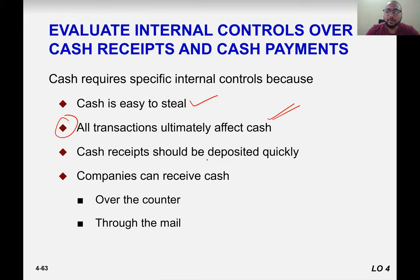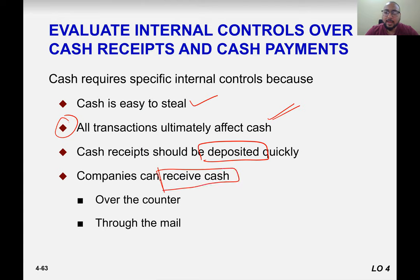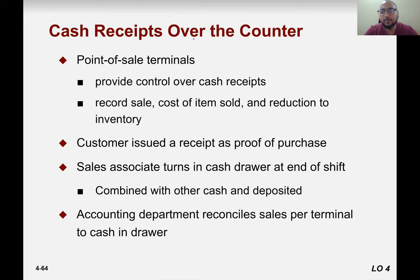Cash receipts should be deposited into the bank as quickly as possible, because the fraud triangle can be activated through motive or realization. Cash can be received over the counter or through mail. You can give customers the facility to deposit to a bank or to a company cashier, or put cash in a mailbox.